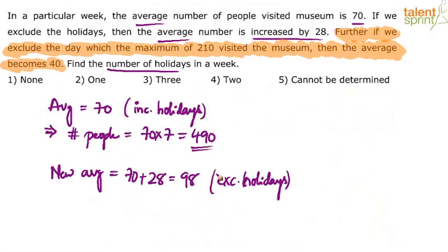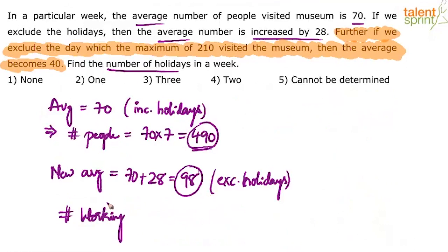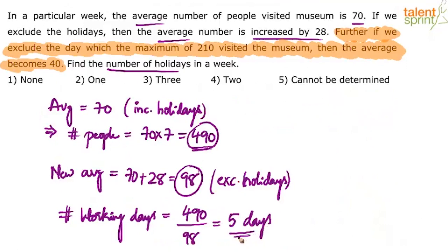We need to find the number of holidays. The total is 490, and the average for non-holiday days is 98. The number of working days is therefore 490 ÷ 98 = 5 days. If there are 5 working days in the week, then the number of holidays is 7 − 5 = 2.